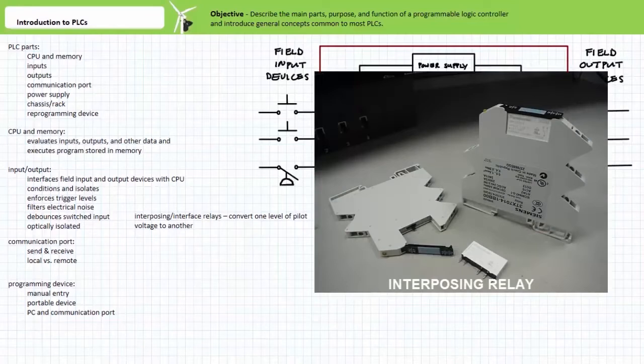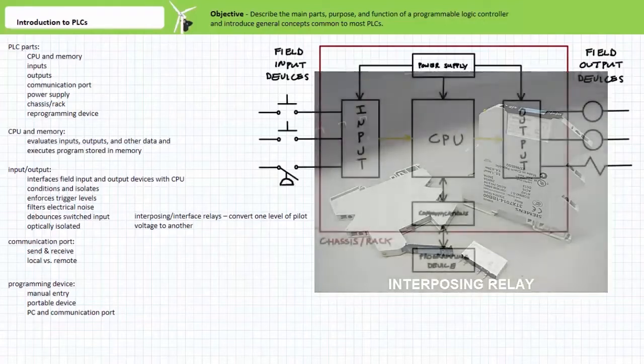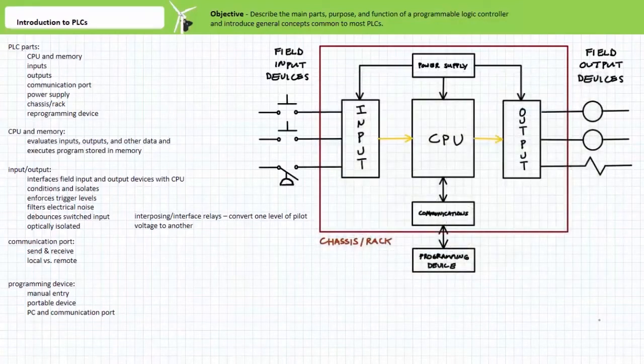As the name implies, an interposing relay simply interfaces the two different voltage schemes. Input and output signals are conditioned by the input and output modules by enforcing minimum trigger levels, filtering electrical noise, and debouncing switched input.